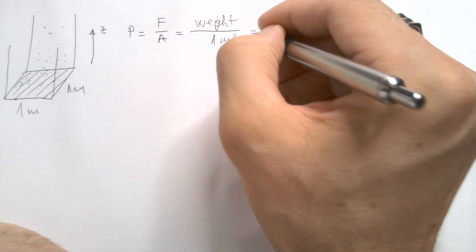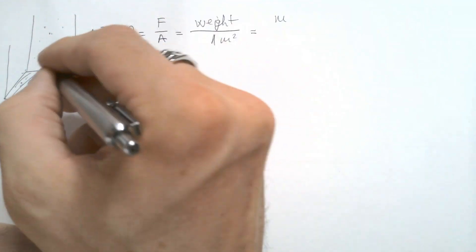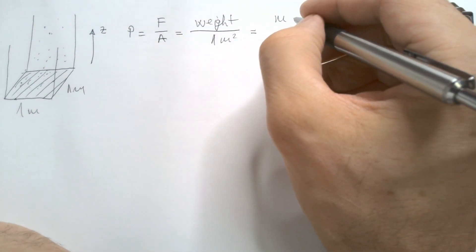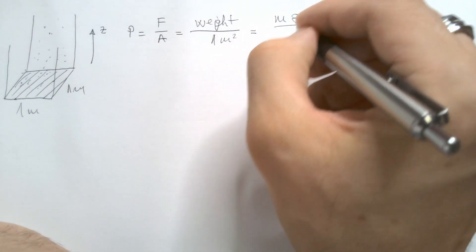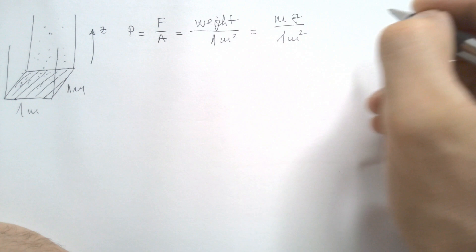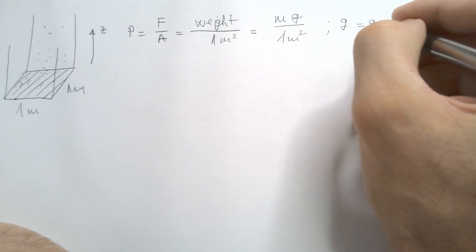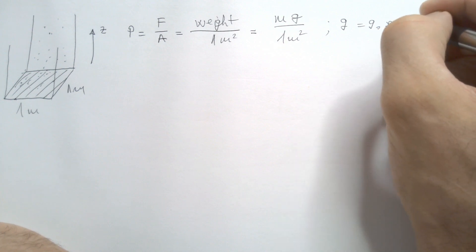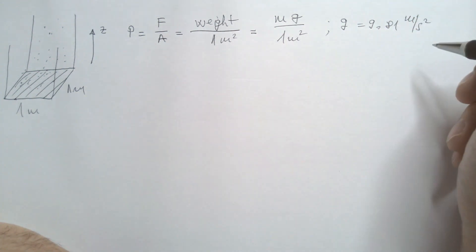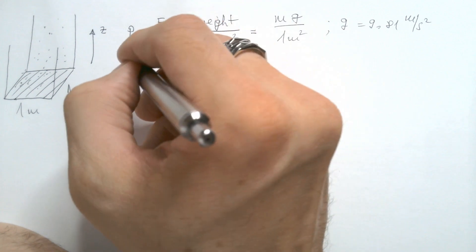But weight, we know, is mass of the air in this column times gravitational acceleration divided by one square meter. Of course, we know that gravitational acceleration is 9.81 meter per second square.